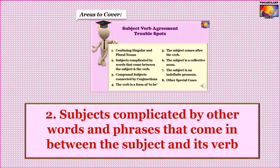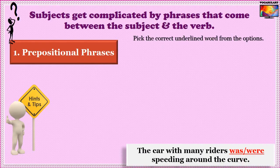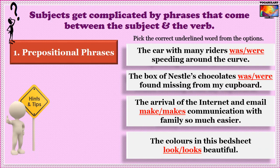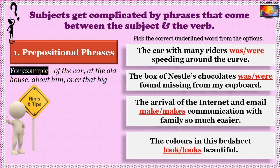The second area which can create confusions in subject-verb agreement is the other words and phrases that come in between the subject and its verb. These additional words could be prepositional phrases — phrases such as 'of the car,' 'at the old house,' 'about him,' 'over that big hill' — all examples of prepositional phrases because they start with a preposition. Try out the exercise on your right, and pause the video if you wish to try them at your own pace.